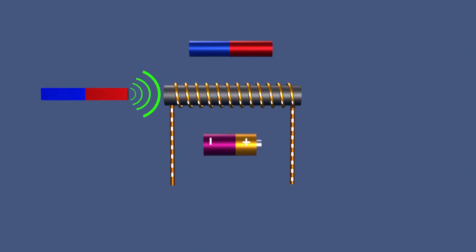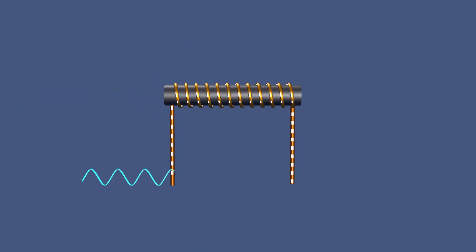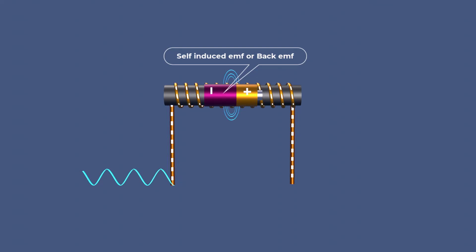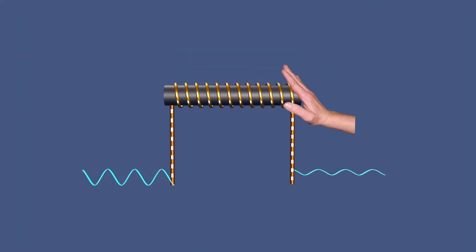This phenomenon allows inductors to transform magnetic energy back into electrical energy. When alternating current flows through an inductor, it generates a time-varying magnetic field. This magnetic field induces an opposing EMF, known as self-induced EMF or back EMF, which opposes the change in current as per Lenz's law.